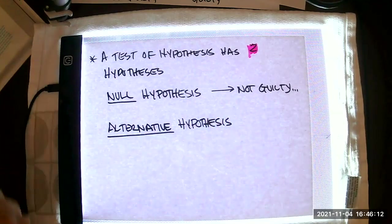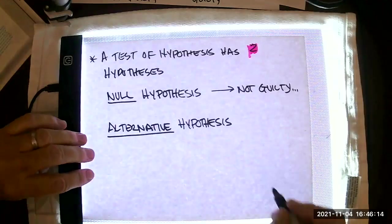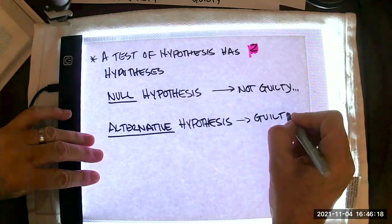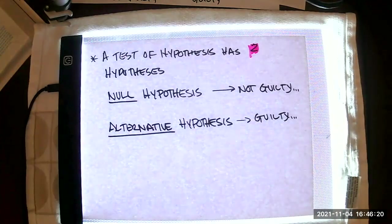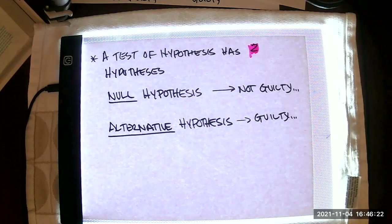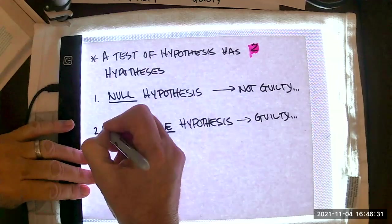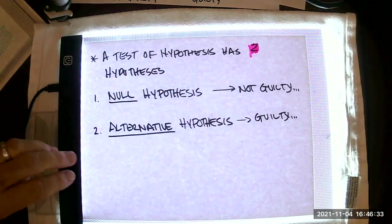The first of our hypotheses is called the null hypothesis. This is very similar to the not guilty verdict, and that's where every trial starts. The null hypothesis is where every test of hypothesis starts. And then we have the alternative hypothesis, which is pretty much identical to the guilty verdict.